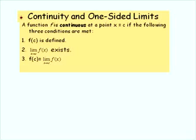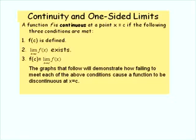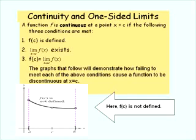Continuity and one-sided limits. A function f is continuous at a point x equals c if the following three conditions are met. First, f of c must be defined. Secondly, the limit as x approaches c of f of x must exist. And finally, f of c must equal the value of the limit as x approaches c of f of x. The graphs that follow will demonstrate how failing to meet each of these conditions causes a function to be discontinuous at x equals c.